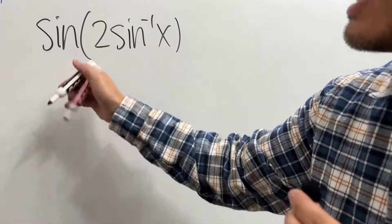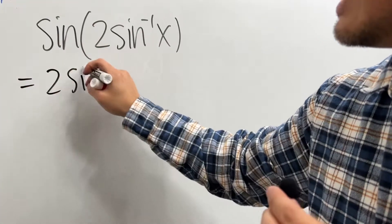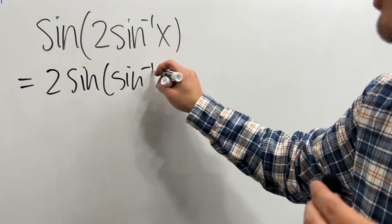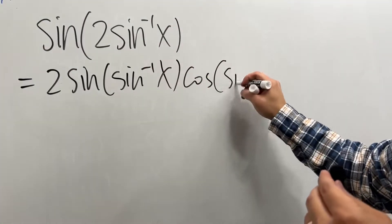This right here is an angle. Double angle formula for sine, right? Which means 2 sine of the angle and then multiply by cosine of the angle. So like this.